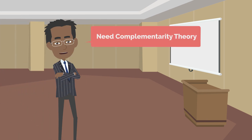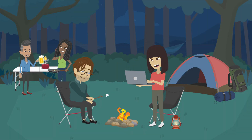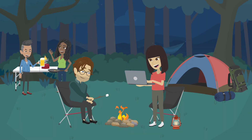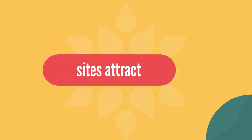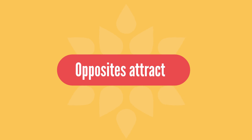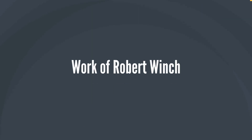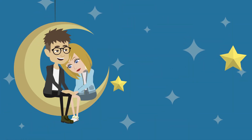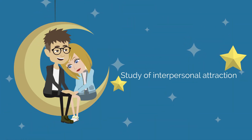Need Complementarity Theory is a psychological concept that proposes individuals are often attracted to others who possess different personality characteristics, suggesting that opposites attract. The theory emerged from the work of Robert Winch, a sociologist, in the 1950s, and it is a key concept in the study of interpersonal attraction and relationships.